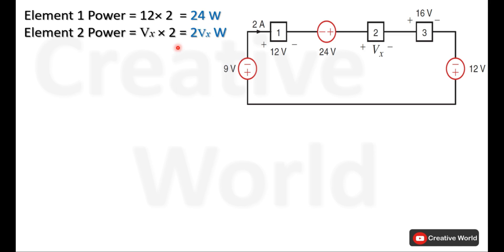Next is element 2. Voltage across this element is Vx and current through this element is 2 amperes. This current is entering from the positive terminal, so it will be taken with positive sign. The power of element 2 will be Vx multiplied by 2, which is 2Vx, and because of the positive sign this power is being absorbed by element 2.